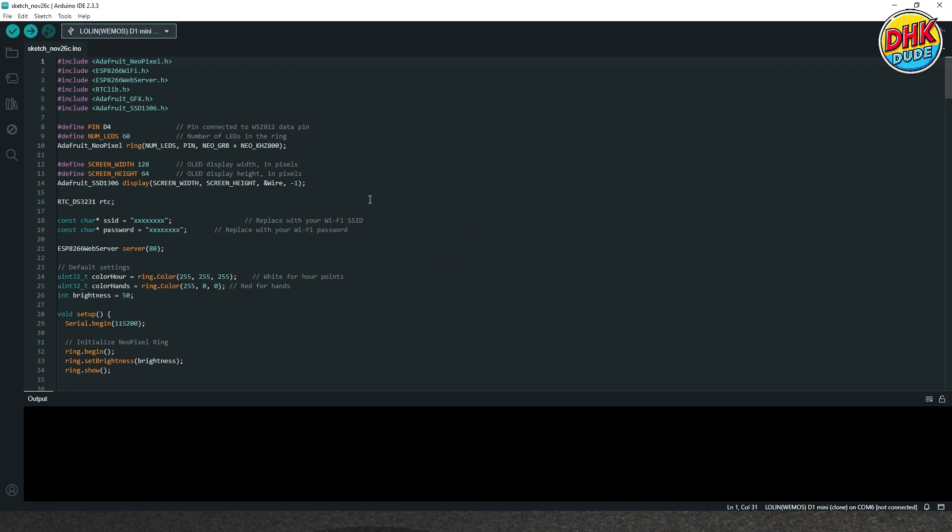So this is the sketch of our NeoPixel clock. You will need Adafruit NeoPixel library to run our LED ring. Here we are defining pin D4 for the NeoPixel ring and total numbers of the LEDs ring has.